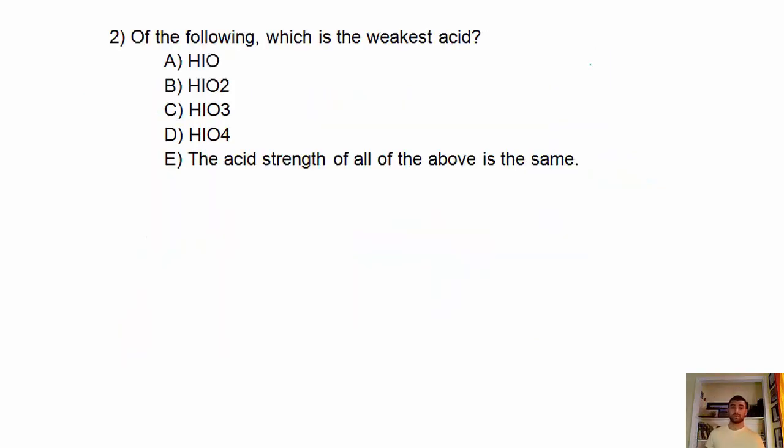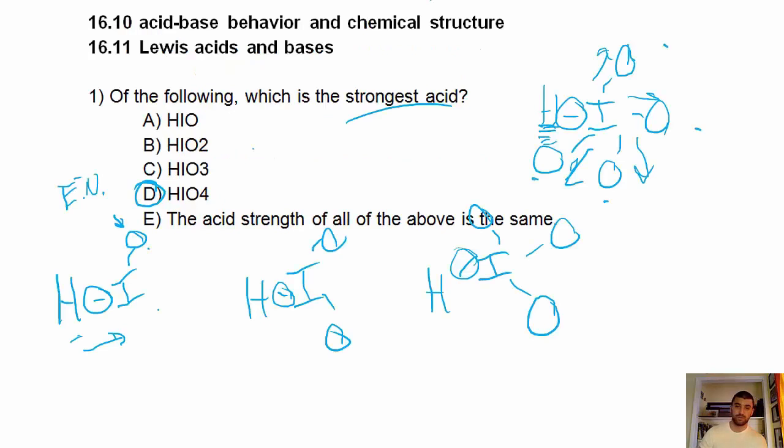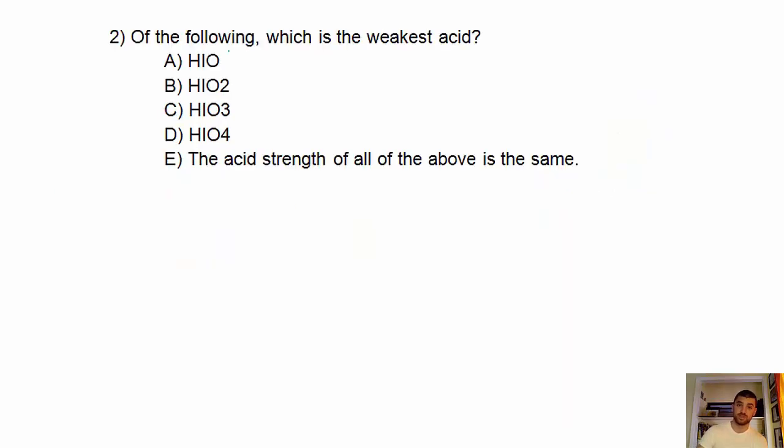All right, so number two of the following, which is the weakest acid? So it's the same thing, but different. HIO4 was the strongest acid because it had the weakest hydrogen-iodine bond. Well, which one's going to have the strongest bond? Which one's going to be the least likely to pop out a hydrogen? It's going to be choice A.